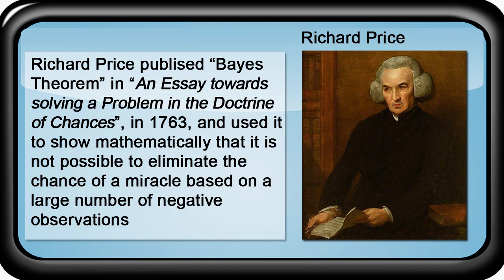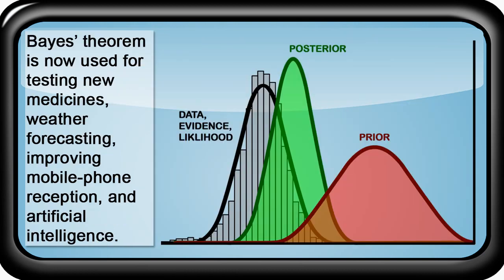In an essay published in 1767, Price showed that even if a person observes the tide has come in a million times, they cannot reasonably say on statistical grounds that it will never stop coming in. Using Bayes' Theorem, based on those million observations, Price calculated that there is a probable chance of the tide not coming in one day. Therefore, Price argued, it is not possible to eliminate the chance of a miracle based on a large number of negative observations. Although it hasn't proved the existence of God, Bayes' Theorem has proved useful in other ways.